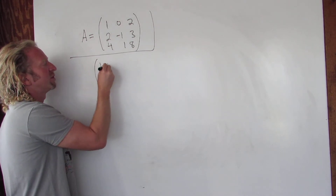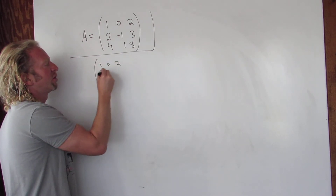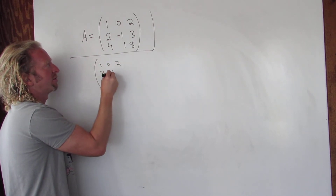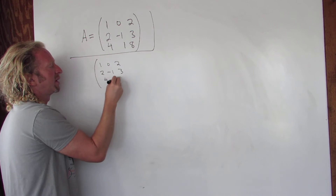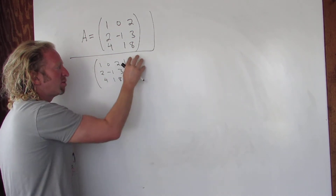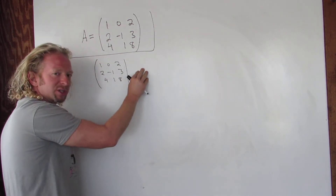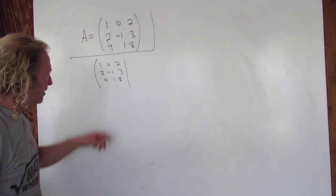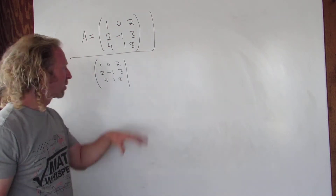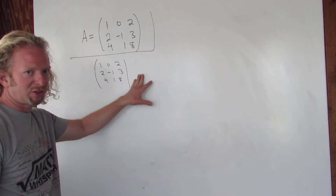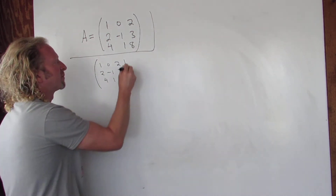So we write: 1, 0, 2, 2, negative 1, 3, 4, 1, 8. Then you draw a line and put the identity matrix here. In this case we have a 3 by 3 matrix, so we write down the 3 by 3 identity matrix.